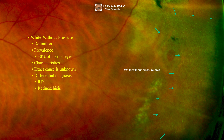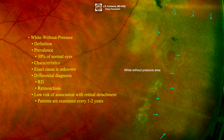White without pressure frequently causes confusion with subclinical retinal detachment and retinoschisis, but indentation clearly reveals that the retina is still opposed to the retinal pigment epithelium. No treatment is necessary. There is a low risk of association with retinal detachment, so patients are examined every one to two years.